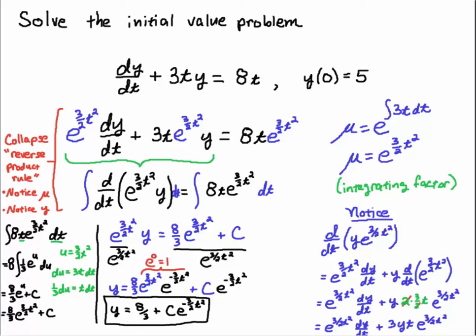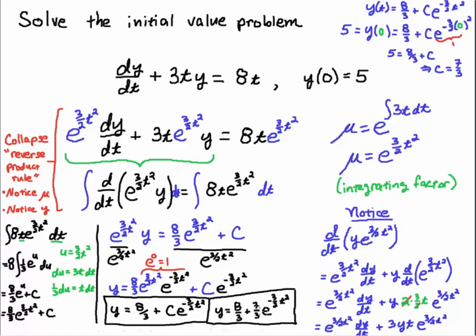So if we didn't have initial data, we'd stop right here and that'd be the end of the problem. However, we do have initial data. We have Y of 0 is equal to 5. So up here on the right, let's deal with that. I rewrite my general solution. I plug in 0 for T. So Y of 0 is equal to 5. That's my initial data on the one hand. On the other hand, I plug in the 0 for T and E to the 0 is 1. So I'm left with C. If I just do some basic arithmetic here, some algebra, I subtract 8 thirds. So 5 minus 8 thirds is 15 thirds minus 8 thirds and I get 7 thirds. So C is 7 thirds.